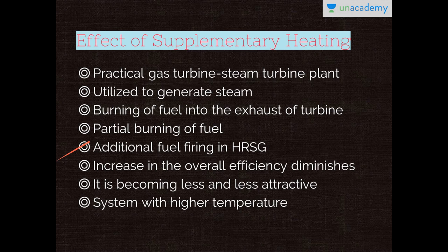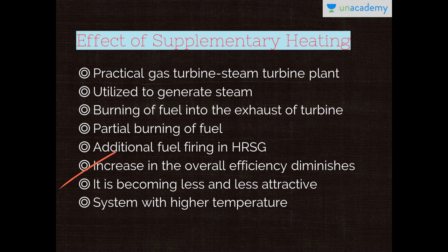Fuel is actually burnt partially first in the combustion chamber of the gas turbine plant, and then in the heat recovery steam generation generator — that is the HRSD — where it is again burnt. If the network outputs of both the GT and ST plants are described as W1 and W2, and ETA1 and ETA2 are their corresponding efficiencies, then the overall efficiency will be derived in our next slide.